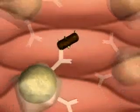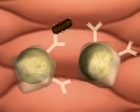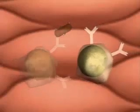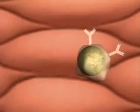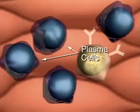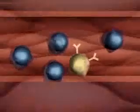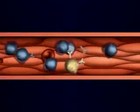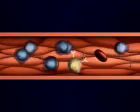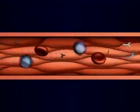These B cells now divide. Some continue to divide, producing many plasma cells. Plasma cells secrete large quantities of antibodies into the bloodstream. This division of only the appropriate B cells is called clonal selection.